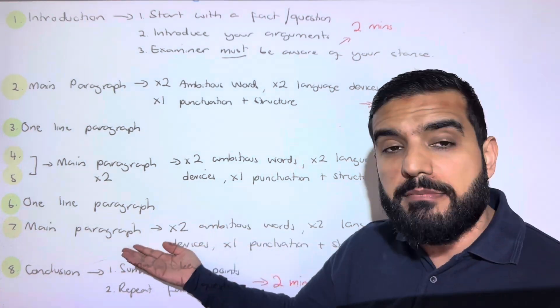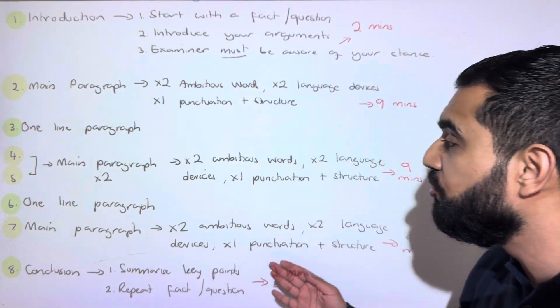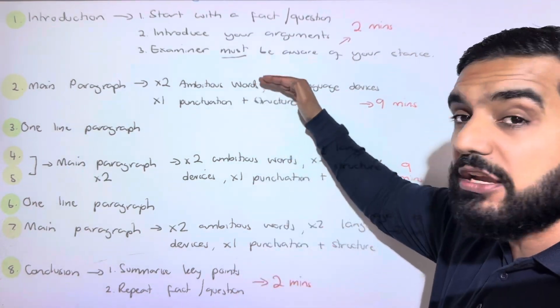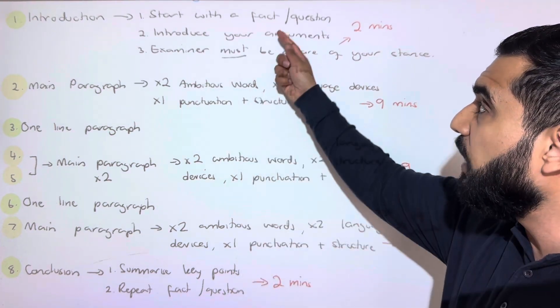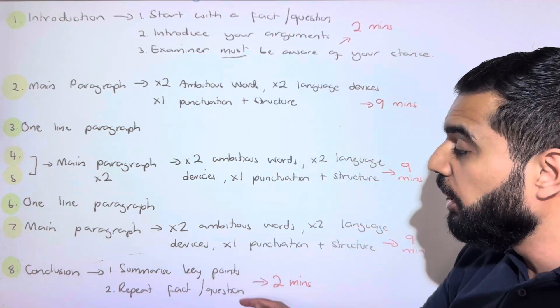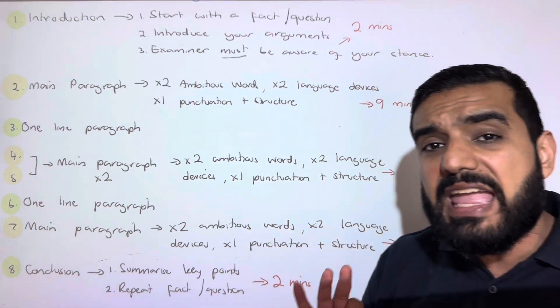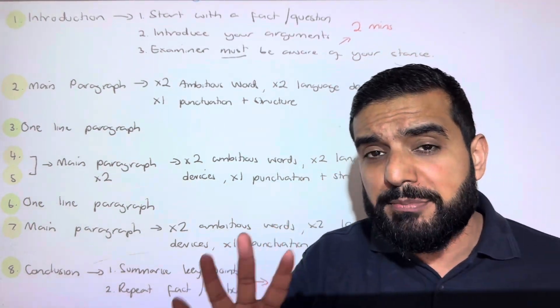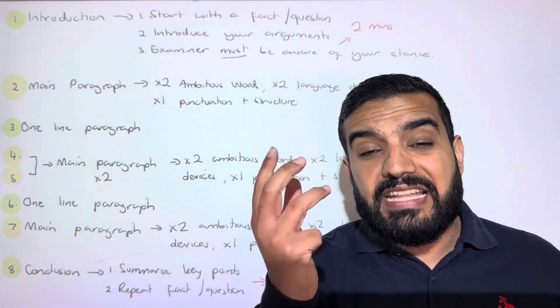Then we do another one-line paragraph, then our final main paragraph, and then our conclusion. In our conclusion, we summarize our key arguments and repeat the fact or question that we used at the top to give us cyclical structure. So even though we're doing eight paragraphs, four of them are tiny: intro, conclusion, one line, one line.